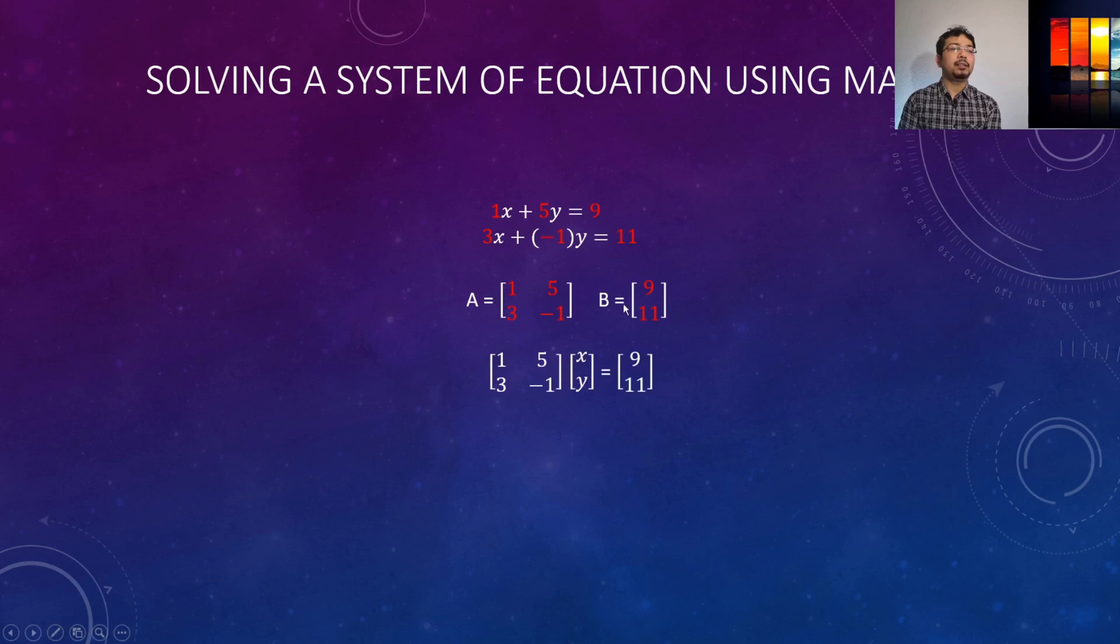So we can write it this A times the vector x and y and put the b vector here. Now if we do the matrix multiplication we will get back exactly the same two equations we had before, so we just rearrange these to represent all these coefficients in a matrix or vector way.